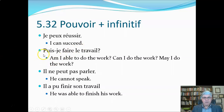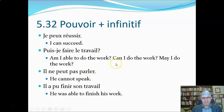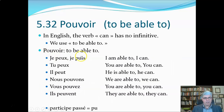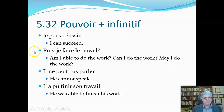Here we've got a question: Puis-je faire le travail? We have inversion where the subject comes after the verb, just like in English to make a question. Word for word it comes out: 'Am I able to do the work?' — 'Can I do the work?' We can also translate it as 'May I do the work?' The French don't get too uptight about the difference between 'can' and 'may' — they would use pouvoir for both. Puis-je is that alternate form of je peux; we've got inversion because it's a question.